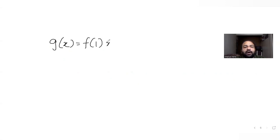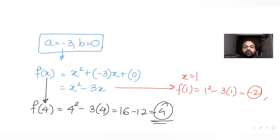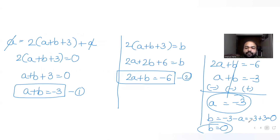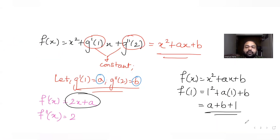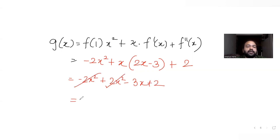Now let's find g(x). We have g(x) = f(1)·x² + x·f'(x) + f''(x). With f(1) = 1 − 3 = −2, f'(x) = 2x − 3, and f''(x) = 2, substituting gives g(x) = −2x² + x(2x − 3) + 2 = −2x² + 2x² − 3x + 2. The x² terms cancel, giving g(x) = −3x + 2.